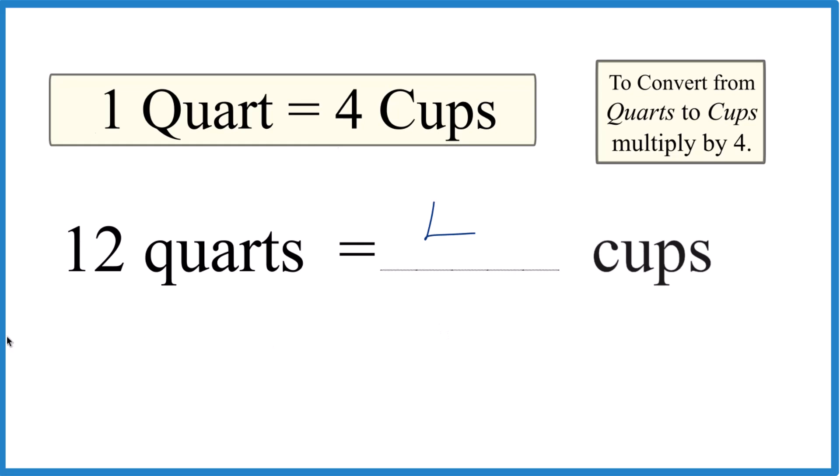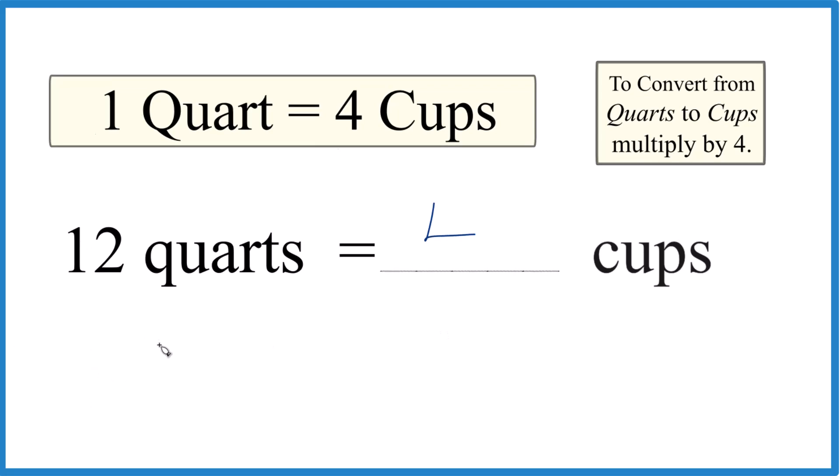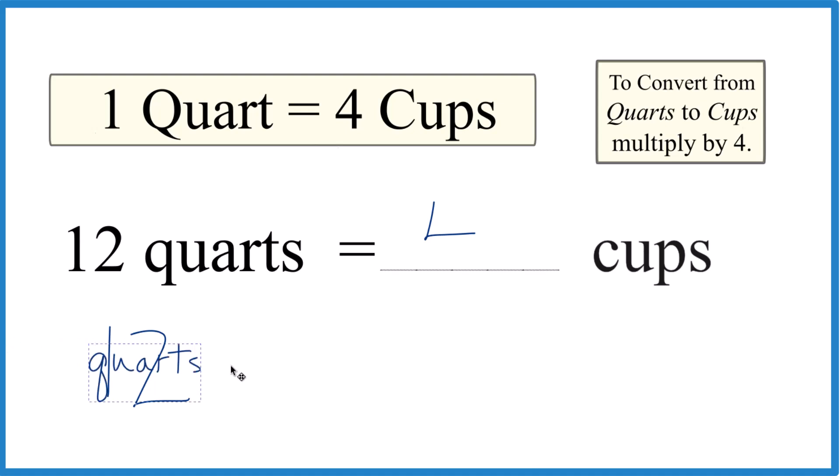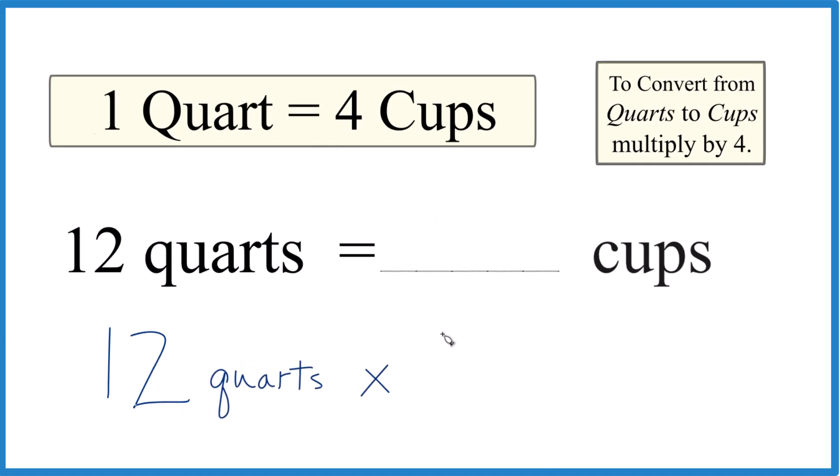Another way to do this is to take our 12 quarts right here, and we're going to multiply those 12 quarts by four. And that's because if we're going from quarts to cups, we multiply by four.